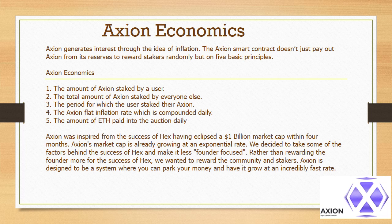Axion generates interest through the idea of inflation. The Axion smart contract pays out Axion rewards to stakers based on 5 basic principles: 1. The amount of Axion staked by a user. 2. The total amount of Axion staked by everyone else. 3. The period for which the user staked their Axion. 4. The Axion flat inflation rate, which is compounded daily. 5. The amount of ETH paid into the auction daily.